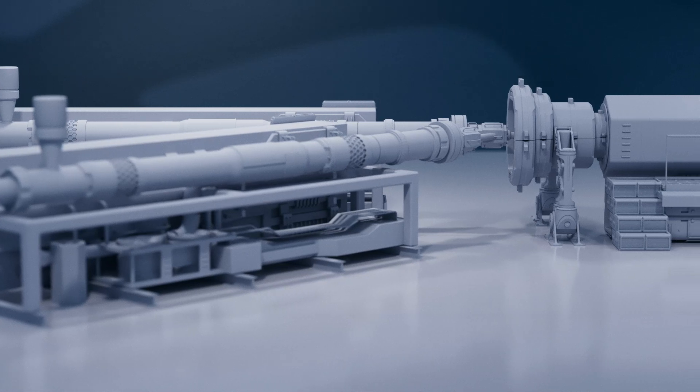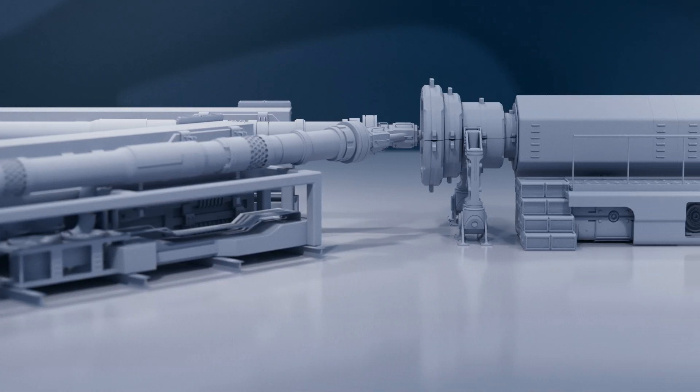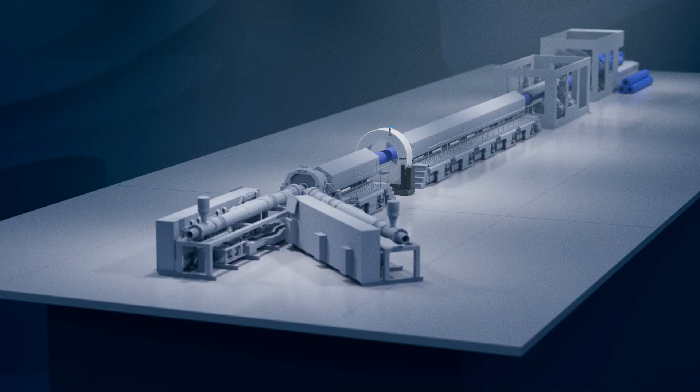Extrusion lines for tubes and pipes must be material and cost-efficient. Every second of overproduction has a negative environmental and financial impact.